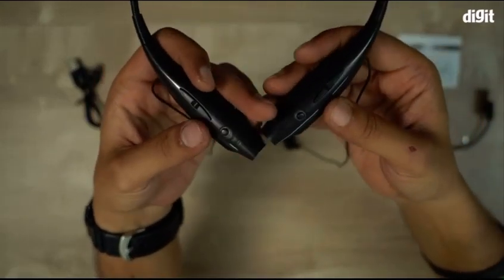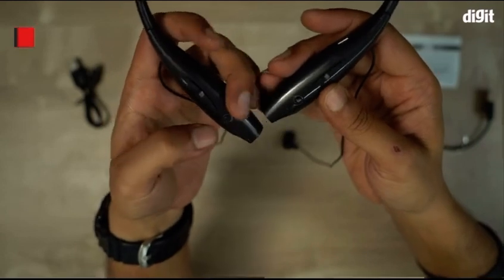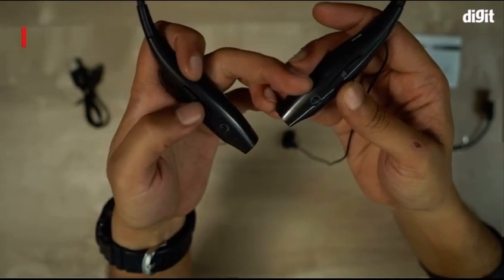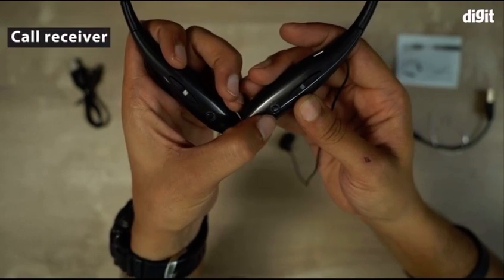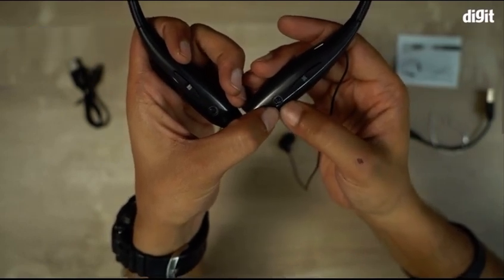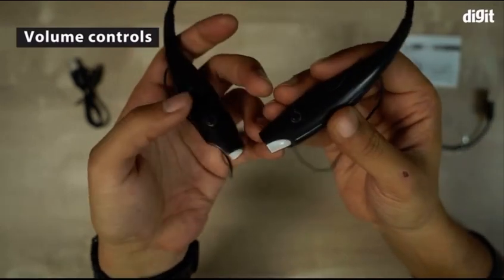There are a lot of buttons on the modules. This one is your play-pause button, and these are the buttons that you use to change track. This is your call reception button which also doubles as an LED indicator, and this is your volume rocker.